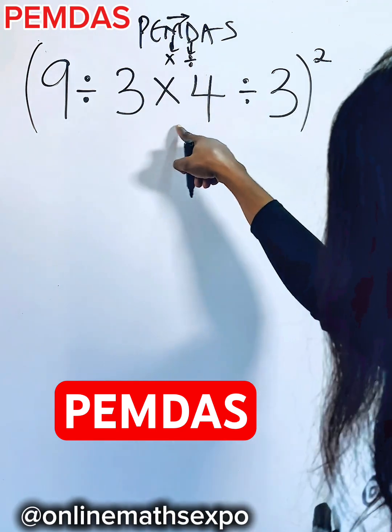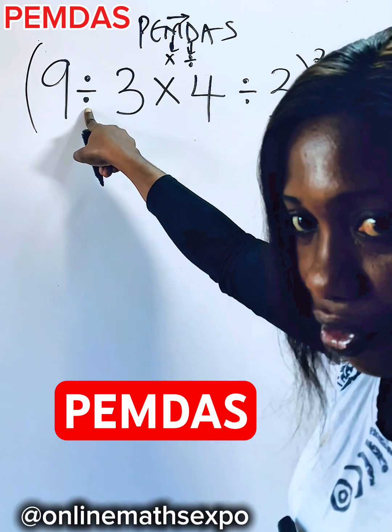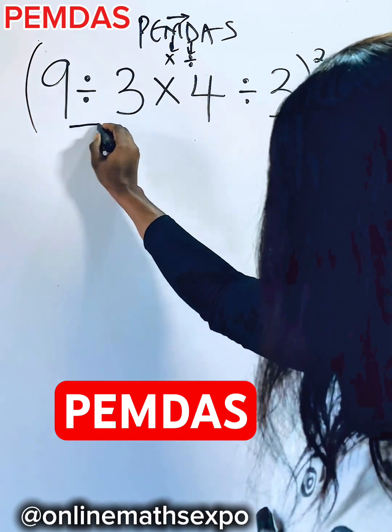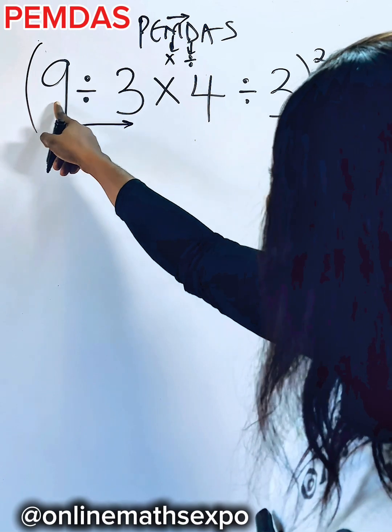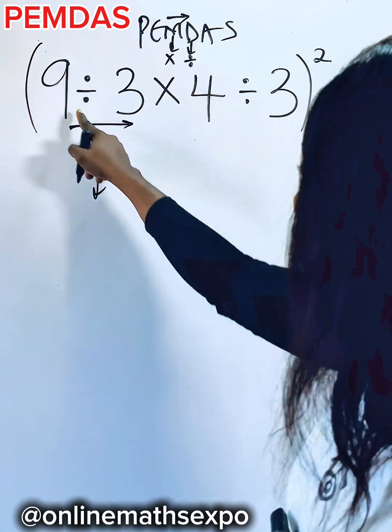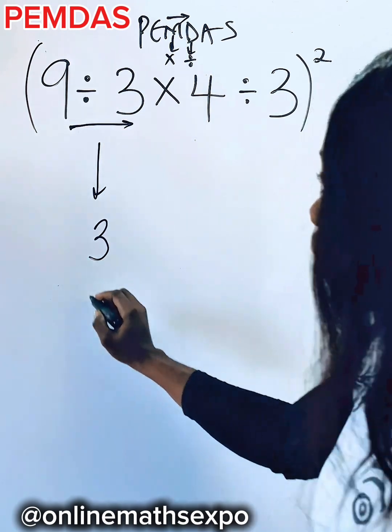So beginning, looking at this, you observe that division came first. So we are going to work with this first. So we are going to do 9 divided by 3. And when you divide 9 by 3, it gives you 3.